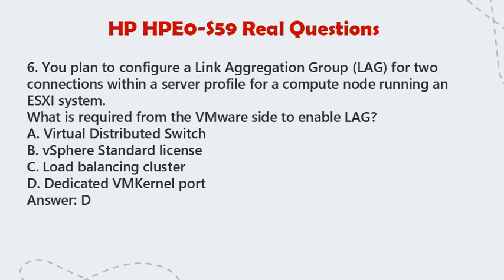Question 6: You plan to configure a link aggregation group (LAG) for two connections within a server profile for a compute node running an ESXi system. What is required from the VMware side to enable LAG? a. Virtual Distributed Switch. b. vSphere Standard License. c. Load Balancing Cluster. d. Dedicated VM Kernel Port. Answer: a.